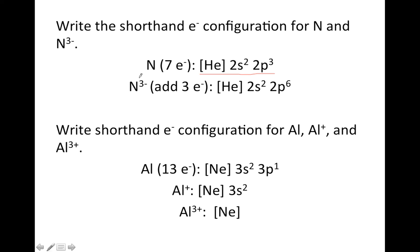And then N³⁻, negative charge, so we're going to add three electrons. We just take what we wrote before and change the ending from a 3 to a 6, so now it ends in 2p⁶ instead of 2p³.